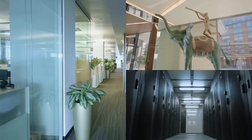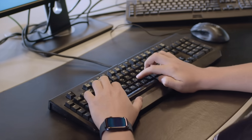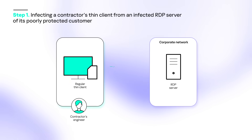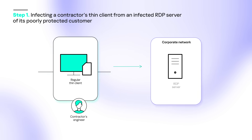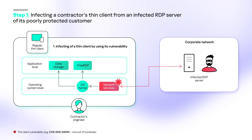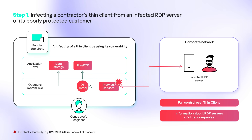But what does it mean for business? Let's look at a real-world example. Imagine a contractor that provides remote services to its customers, for example, equipment maintenance. One of its engineers remotely connects to the server of one of its smaller customers. The customer's server turns out to be infected, and as a result, the contractor engineer's Thin Client becomes infected too, due to a vulnerability in the Thin Client component.